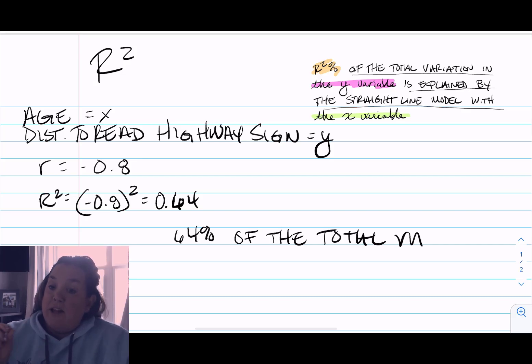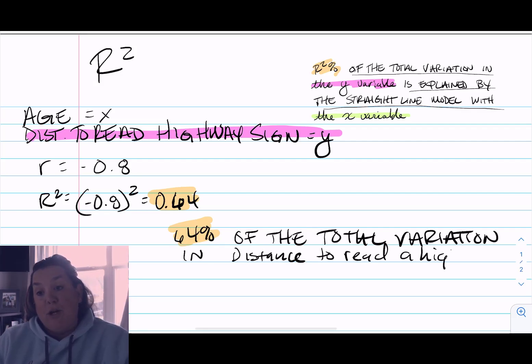Then we always say: 64% of the total variation in the y variable - which here is distance to read a highway sign - so 64% of the total variation in distance to read a highway sign is explained by the straight line model with...